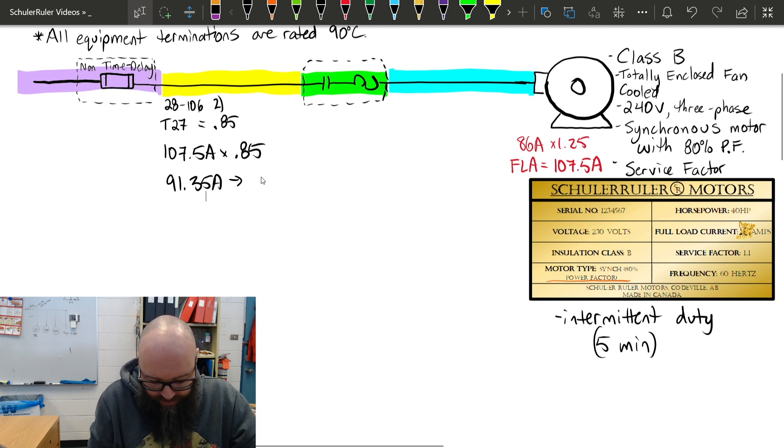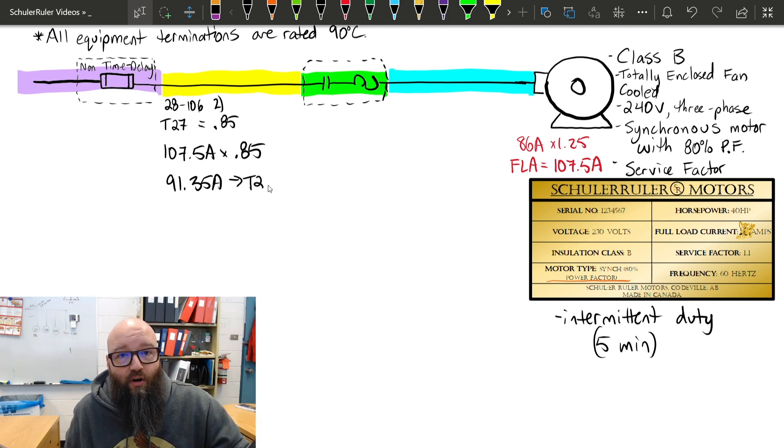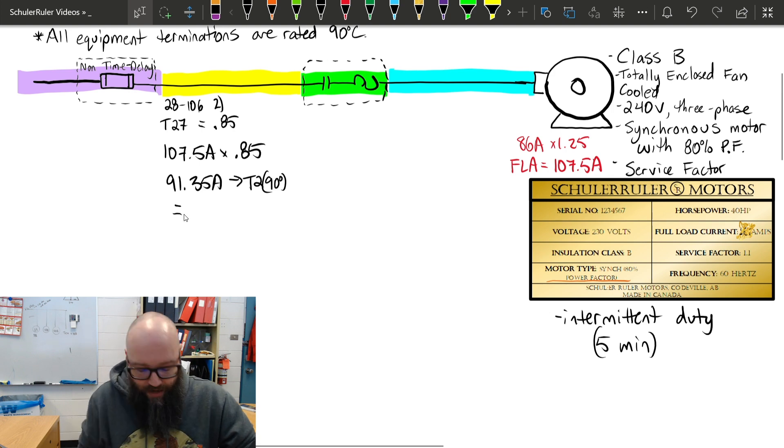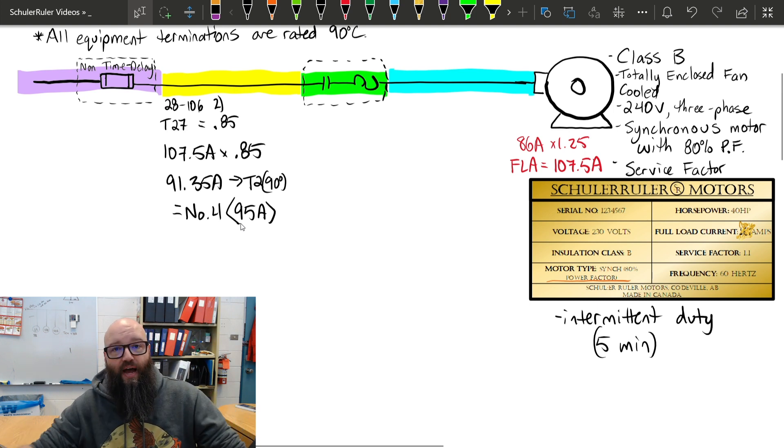We're going to take that to table 2. Because it says up at the top that our equipment termination temperatures are 90 degrees, I'm going to use the 90-degree column when I go to table 2, which should yield a number 4. That number 4 has an allowable ampacity of 95 amps. That'll safely handle that 107.5 amps at that 85%. So that's our branch circuit conductor.